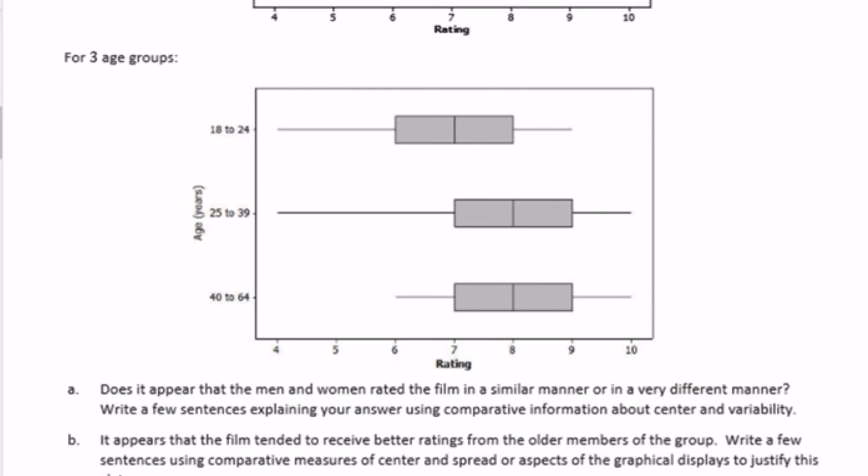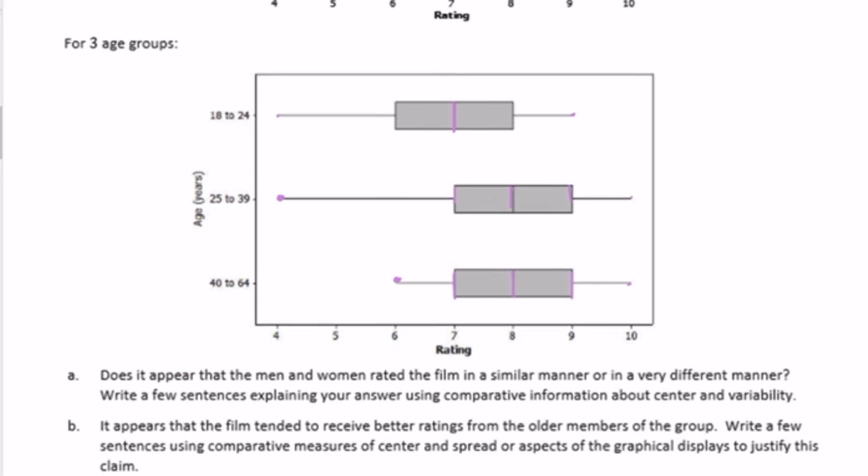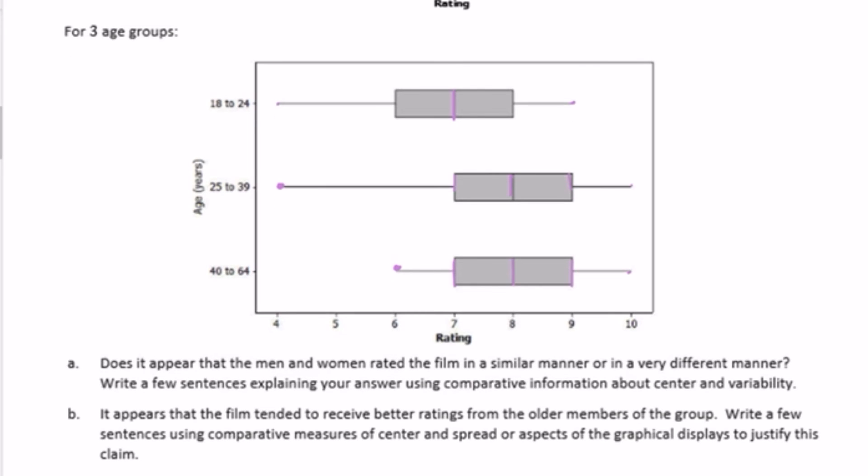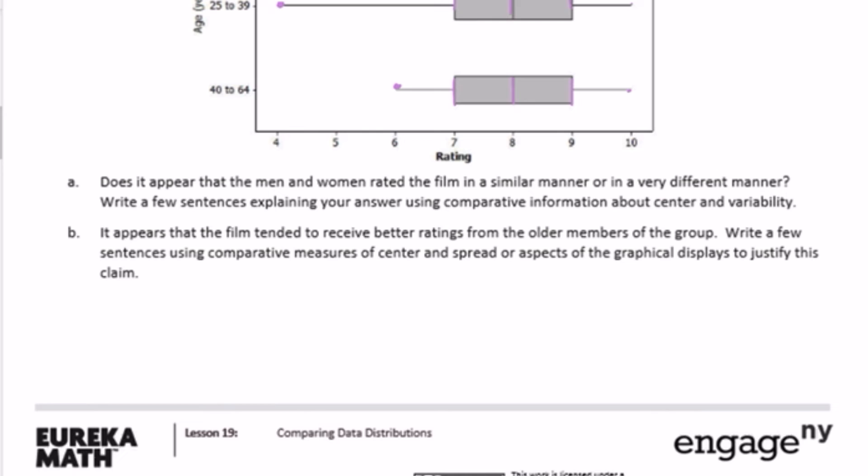And then if you add in the three age groups, so these are women and men, and these are for the age groups. So it looks like the older age group was similar. They liked the movie. Same medians, similar max, but again, the 25 to 39 just had a lower minimum than the 40 to 60. And then 18 to 24 didn't seem to like it as much. It had a lower median score, lower max score. The highest max score was a 9, so nobody thought it was the best movie they'd ever seen. So those are some talking points that you could talk about in these answers to these questions.